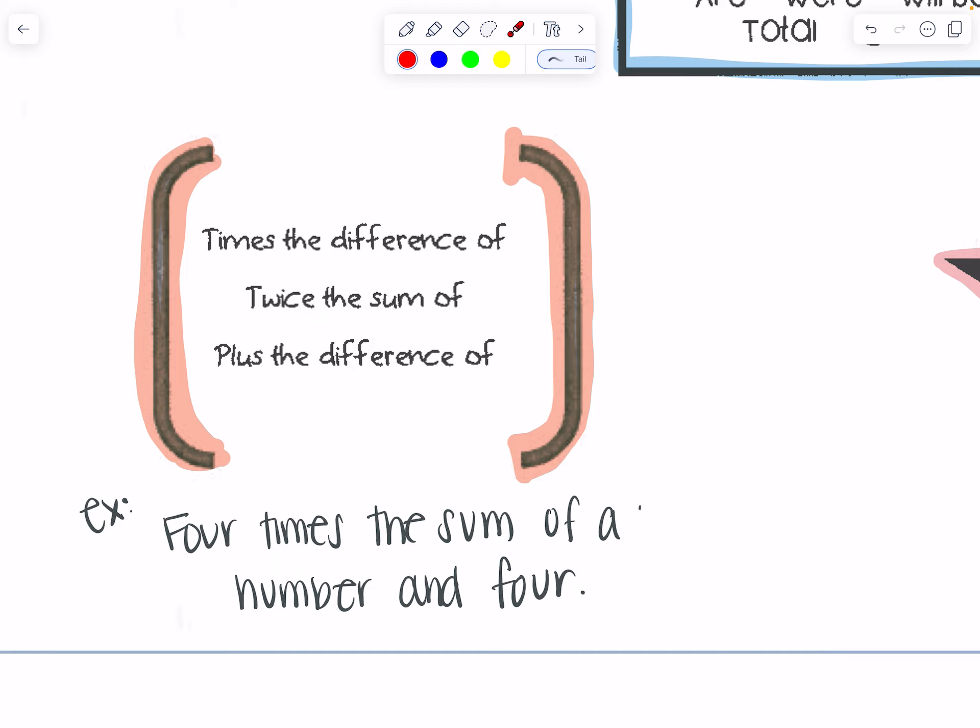All right, parenthesis words. So our example, four times the sum of a number and four. So four times, and I'm timesing the sum of a number and four. So I'm going to have the four times on the outside. And my parenthesis are going to be the sum of a number and four. So x plus four. And then close out that parenthesis.